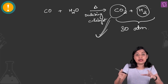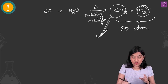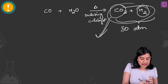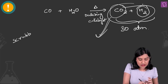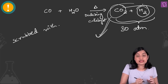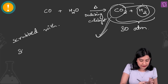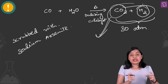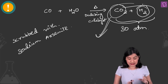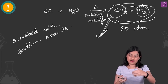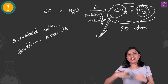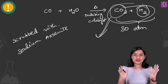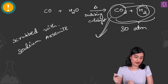H₂ is obtained by scrubbing the entire product mixture with sodium arsenide solution. The carbonate is absorbed into the mixture and hydrogen is separated out, giving you the pure product.